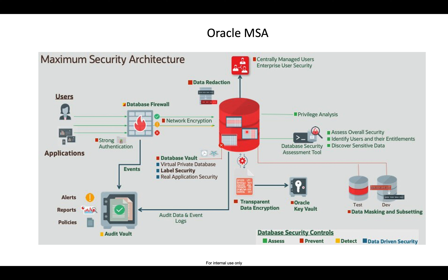You have the database as the central entity, with assessment, prevention, and detection around it. Looking at the color coding: wherever it is related to assessment, it's green. Prevention is red — things like TDE, NNE, and Database Vault. Detection, which is audit-related — Audit Vault and Database Firewall — is yellow.